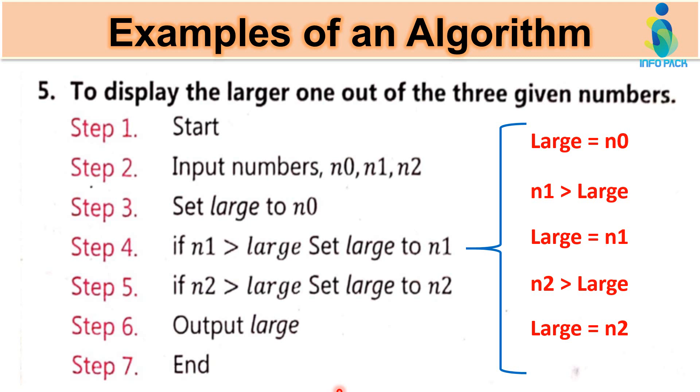Step three meh hum ne kya kiya? Tieno numbers meh se eek number ko pick karke n0 ko large meh store kawa diha. And then n0 ko baqi dhono numbers ke sath compare kira karna hai. N0 n1 se greater hai. Agar nahi hai to n1 ko pick karenghe. Again hum ne n2 ko compare kiya. Large hai? Ya nahi hai? And then us ke baad hum ne output ko display kiya. Algoritm ko end kar diya. Let's discuss example number six.